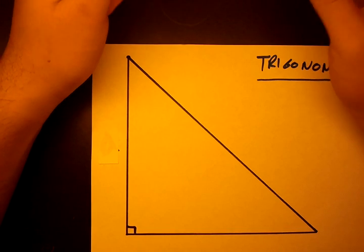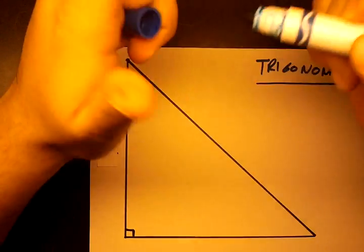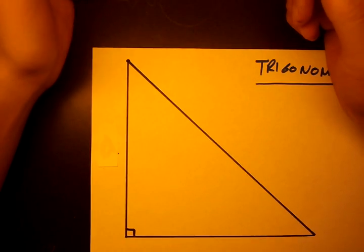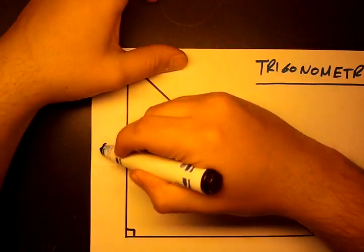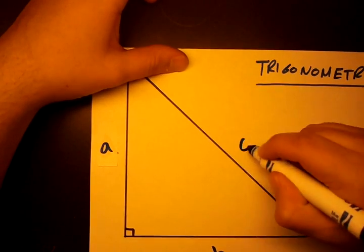And we'll start off by doing the naming conventions for our triangle. So usually our triangle is named as we first go ahead and name the sides with lowercase a, b, and c.